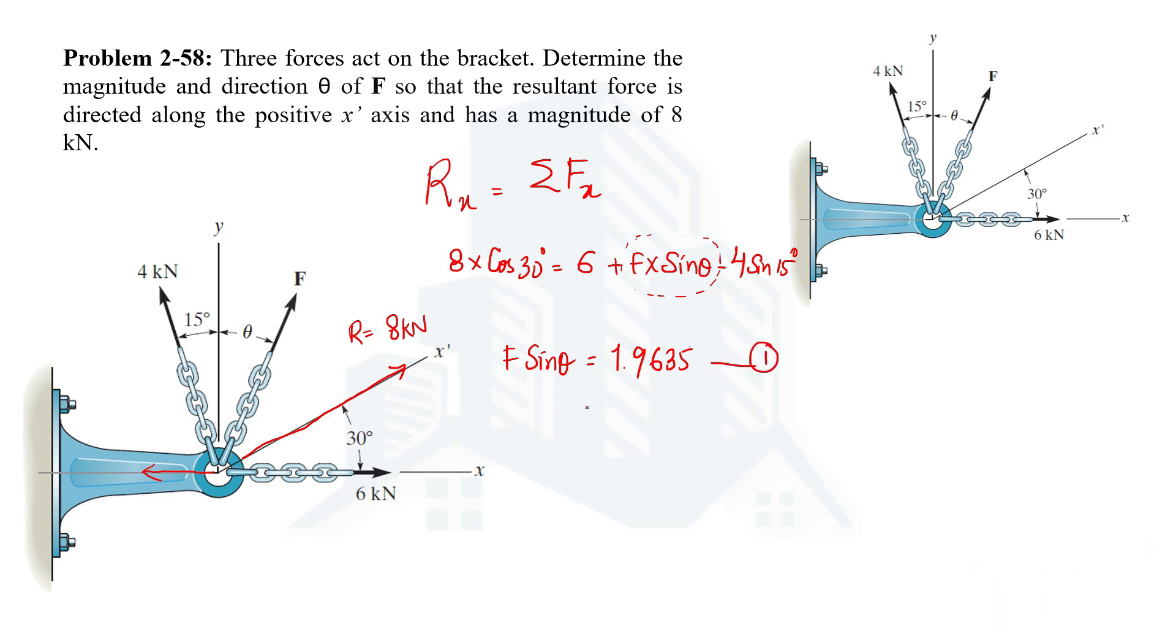For second equation we also know that the y component of the resultant force is equal to summation of all the y components of forces making this resultant of 8 kilonewton. So y component will be calculated as 8 sine 30 degrees equal to—there won't be any y component of 6 kilonewton force but there will be some value of the y component of 4 kilonewton force. So that will be 4 multiplied by cos 15 degrees.